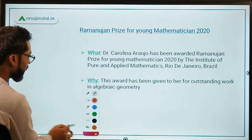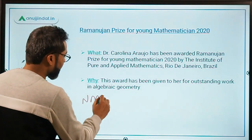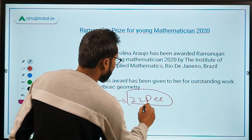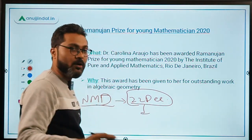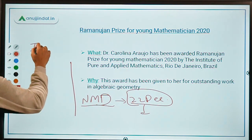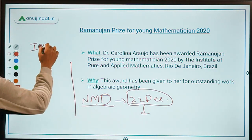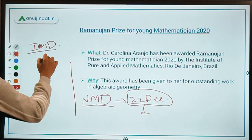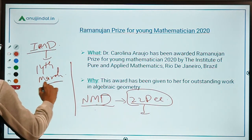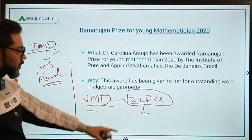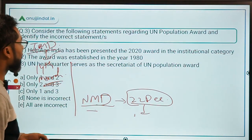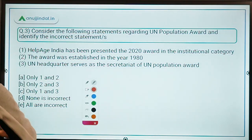Before moving on, note that National Mathematics Day is observed on 22nd December, which is the birthday of S. Ramanujan. Do not confuse this with International Mathematics Day, which falls on 14th March. Now let's move to question number 3.